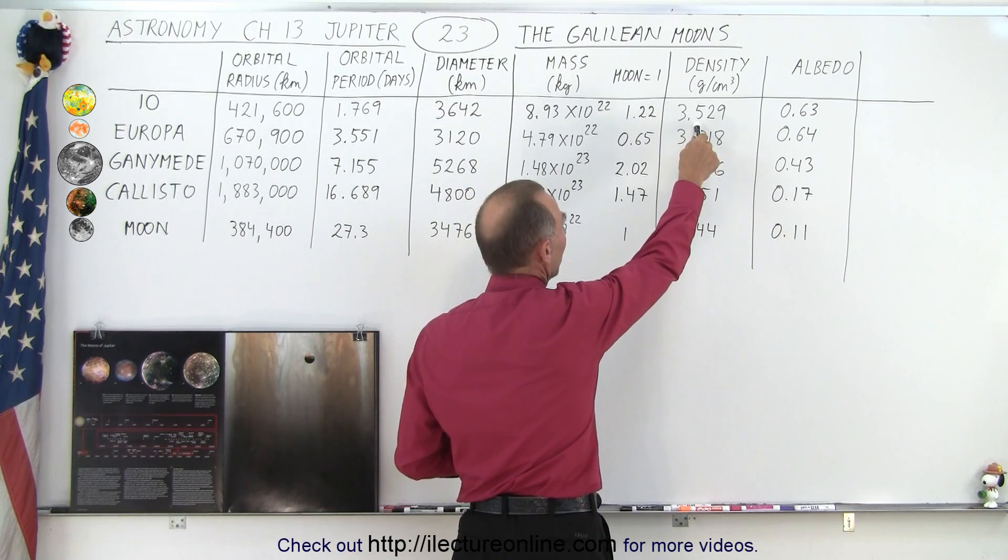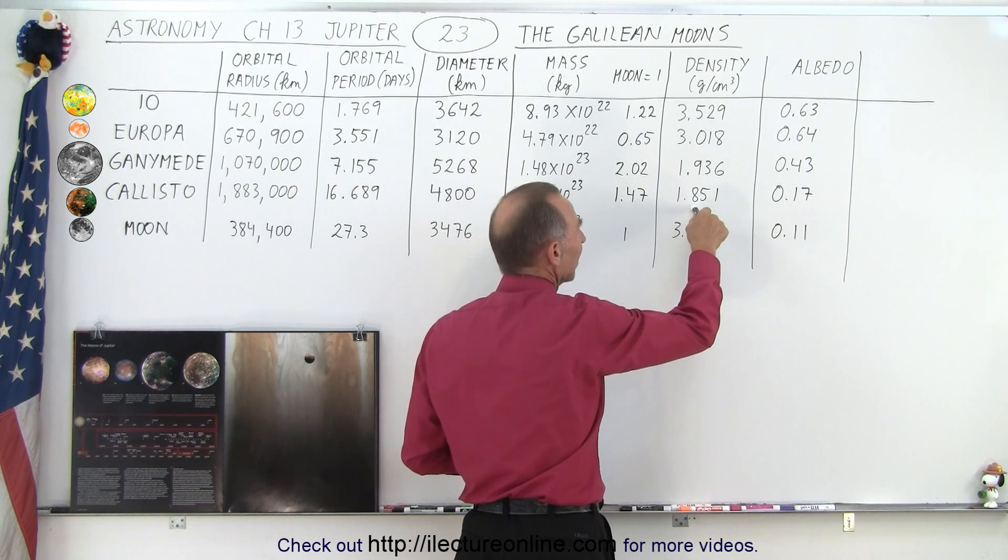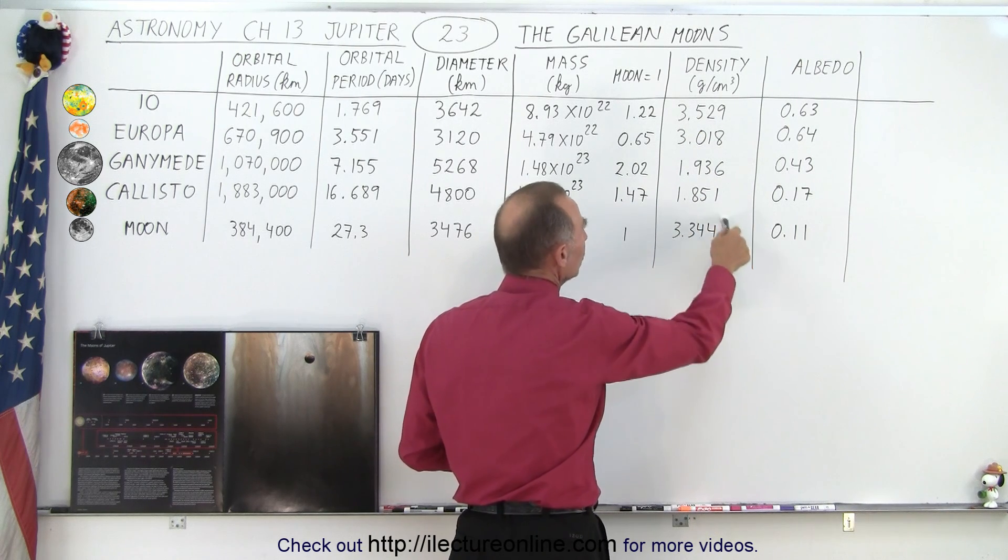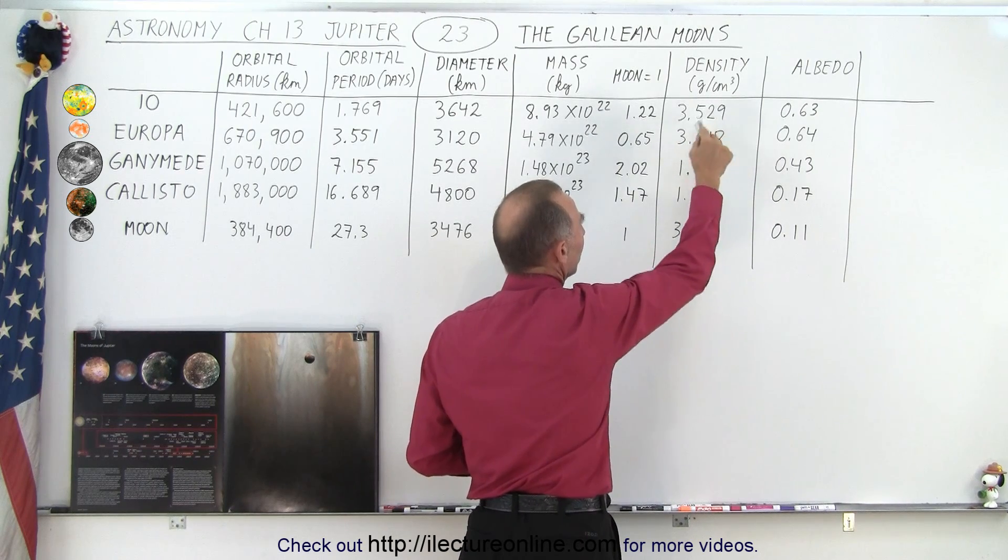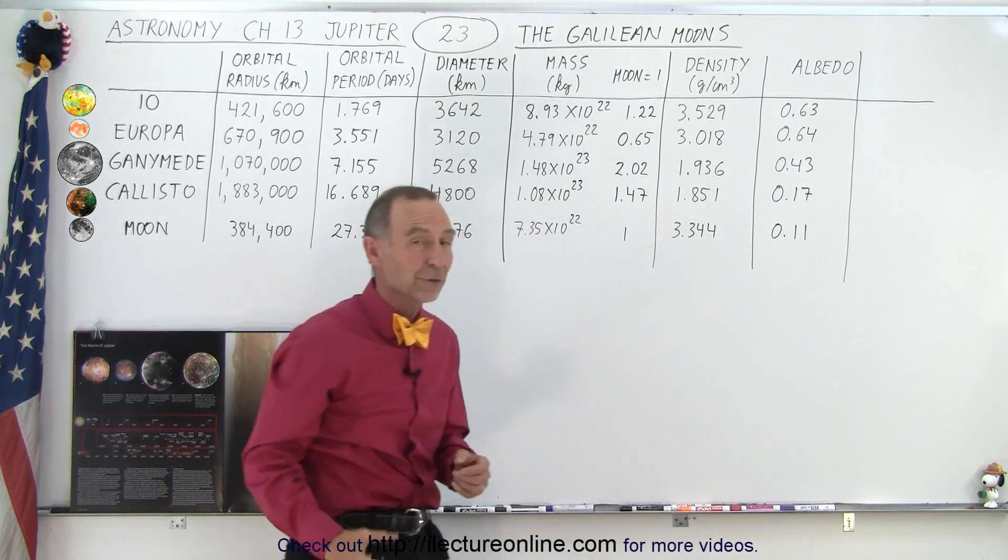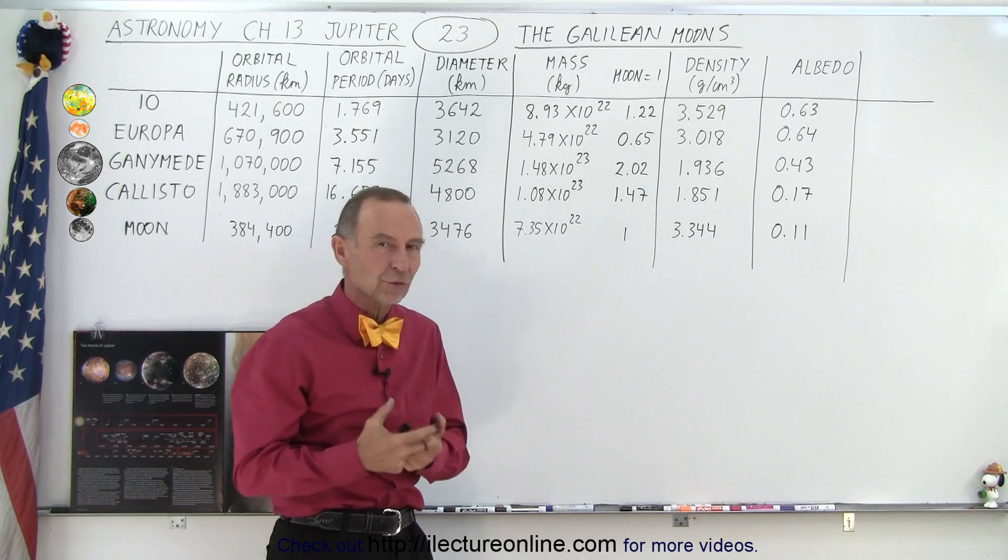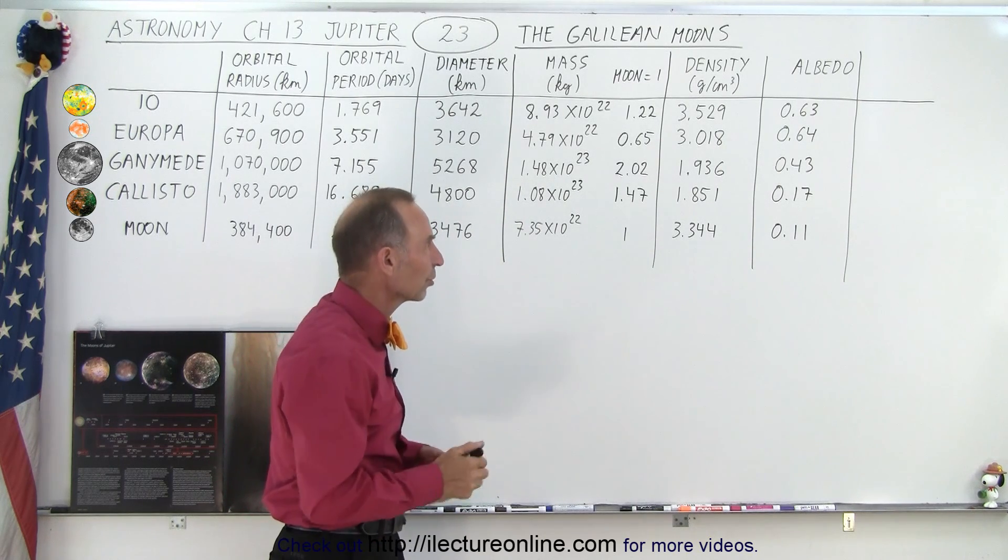Three and a half times the density of water down to 1.85 times the density of water. Compared to the moon, notice that the first two moons, Io and Europa, are relatively dissimilar to the density of the moon. So they have a much higher proportional rock to other materials.